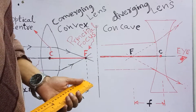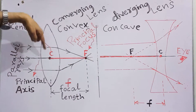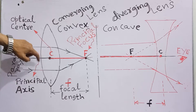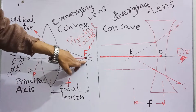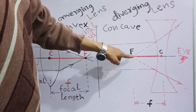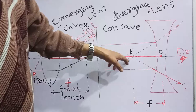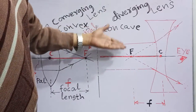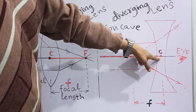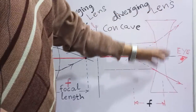The definition of the principal axis is the same for both lenses. The principal axis is the line that passes through the optical center of the lens to the principal focus of the lens. This line is called the principal axis, and the distance along it from optical center to principal focus is called the focal length. Similarly, for the diverging lens, this line passing through the optical center to the principal focus is called the principal axis of the diverging lens.